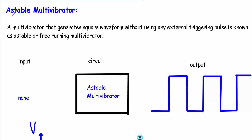The astable multivibrator is a multivibrator circuit that generates a square waveform without using any external triggering pulse. The astable multivibrator is also known as a free running multivibrator. This astable multivibrator will generate a square waveform and we don't have to apply any external triggering pulse.